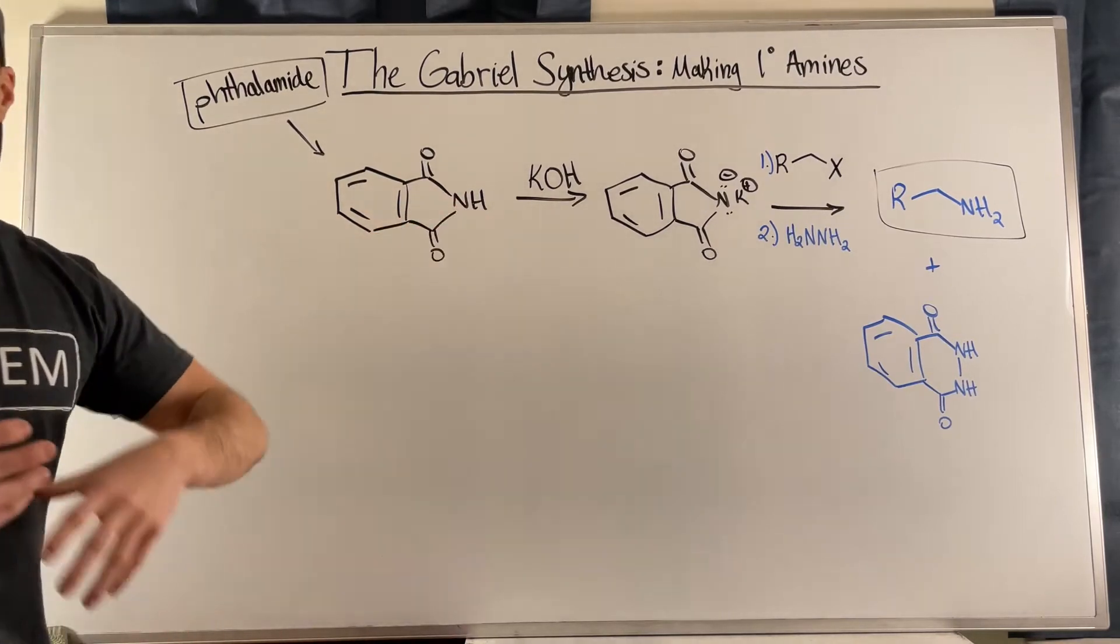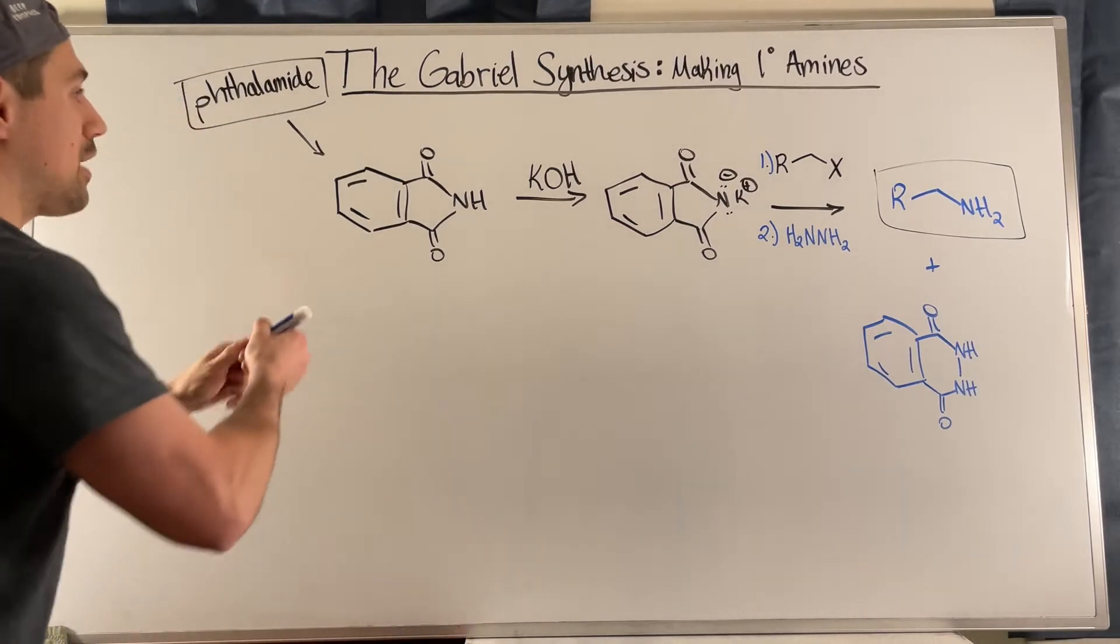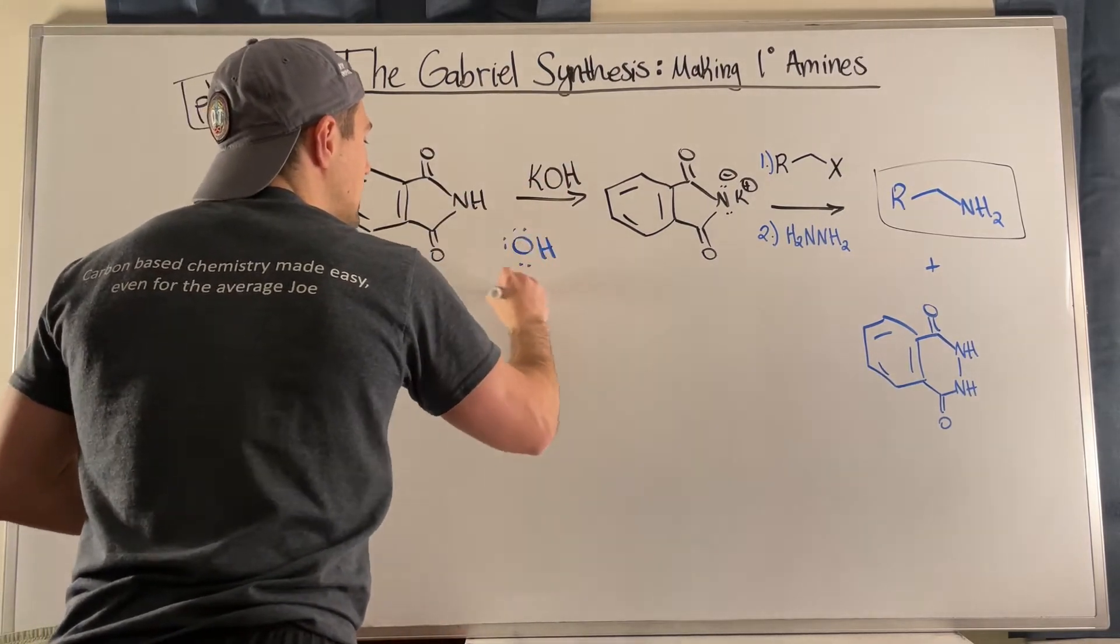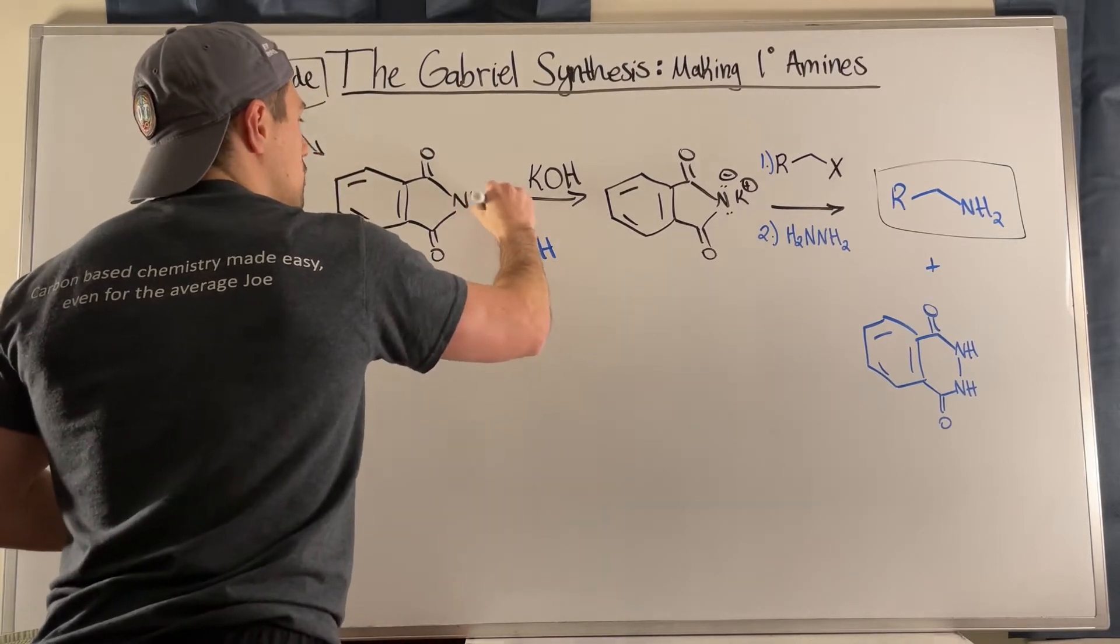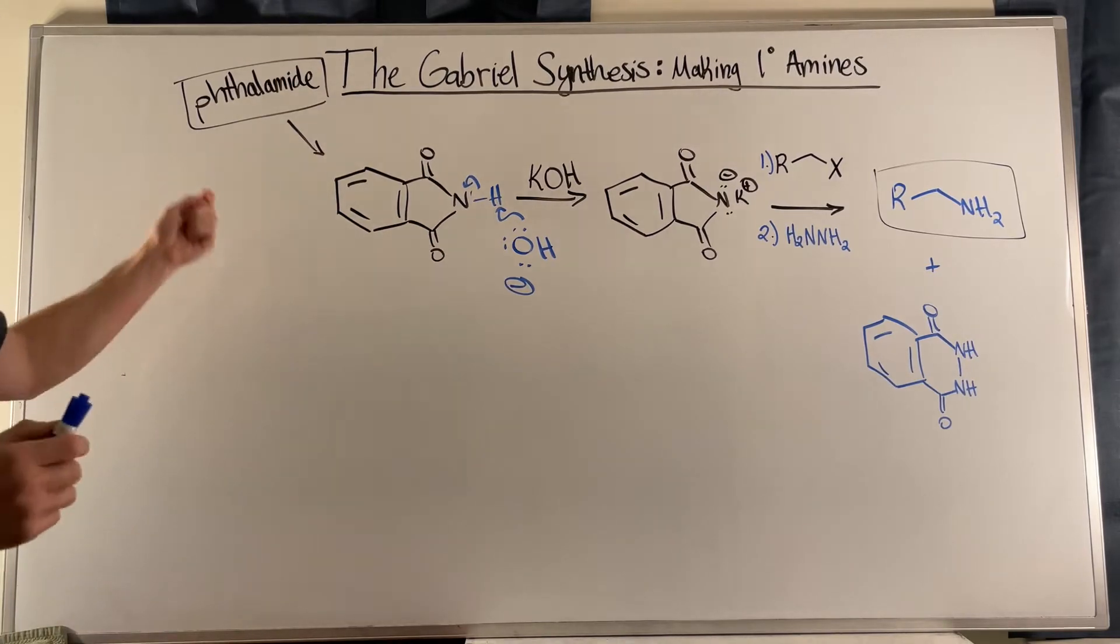This nitrogen, this hydrogen, this proton is very likely to leave. And the reason being, if we have something like potassium hydroxide or any decent base around, is that when that proton is picked off, we have a negative charge left over on this nitrogen.